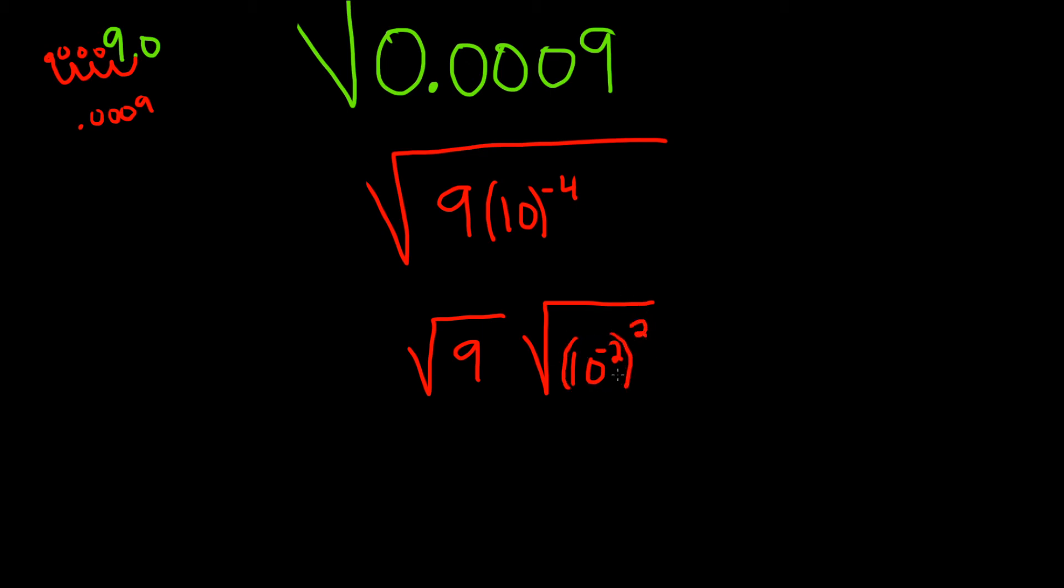Right? You want to write it as something squared. That way you can take the square root of it. If you have the square root of x squared, this is equal to x, as long as x is positive. Here our x is 10 to the negative 2, so it's good. No issues. There's no negative numbers in this problem, besides the exponent.